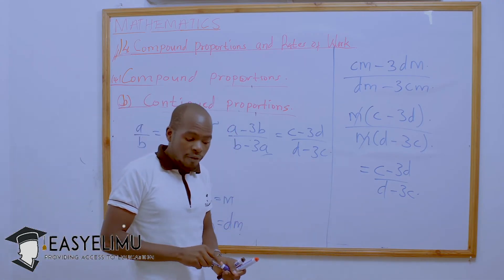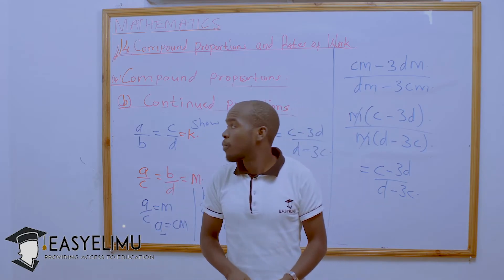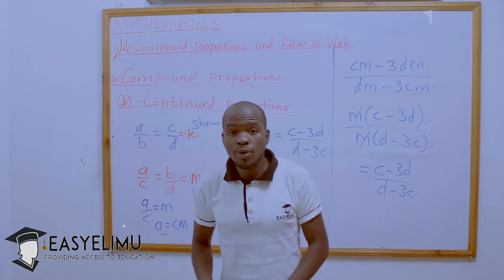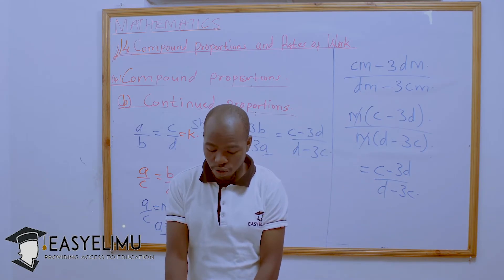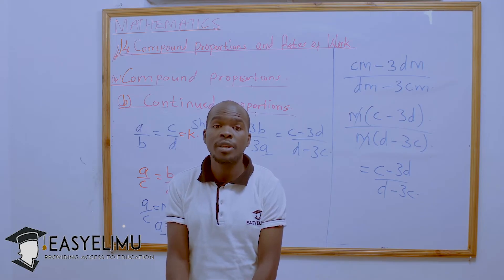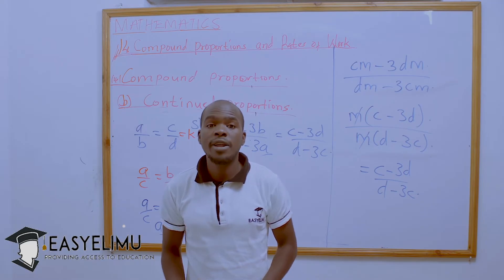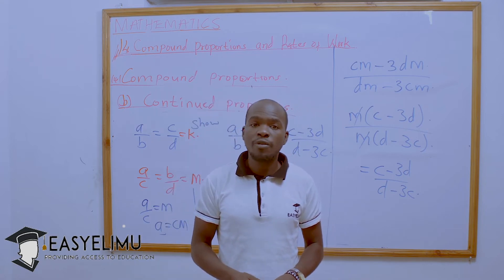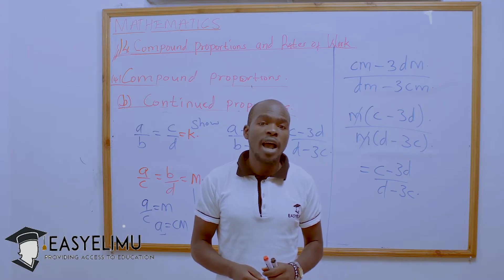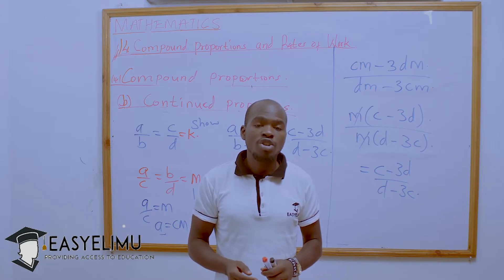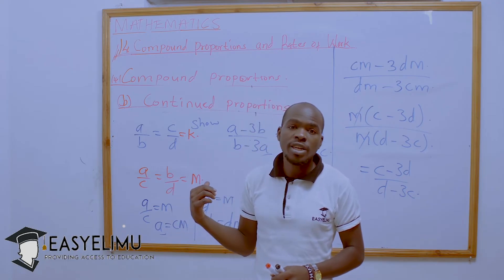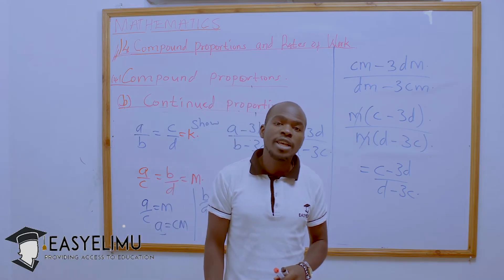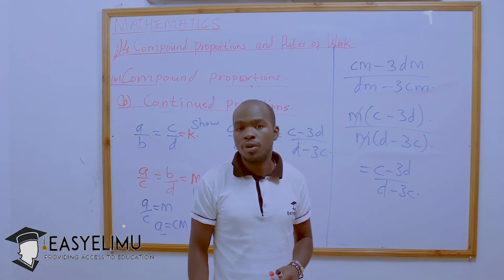We have come to an end of continued proportions and in-proportion. You can use the method of either in-proportion — where you have three or four numbers — and work out any given sum concerning compound proportion. If given three numbers and conditions, use the continued proportions method to solve the problem, so long as you understand your conditions.